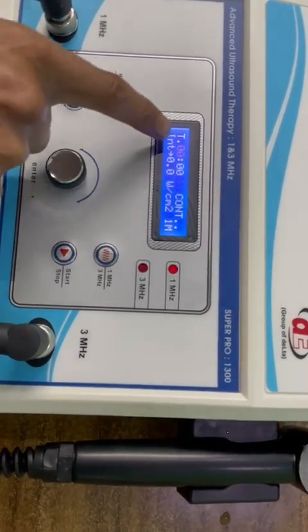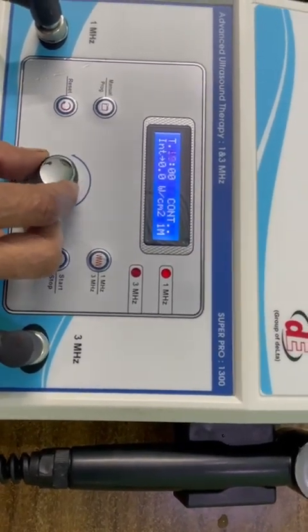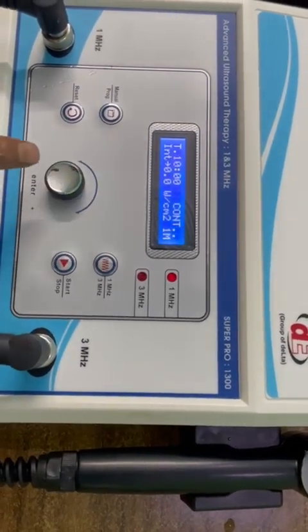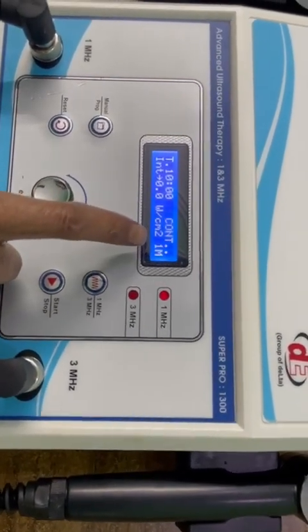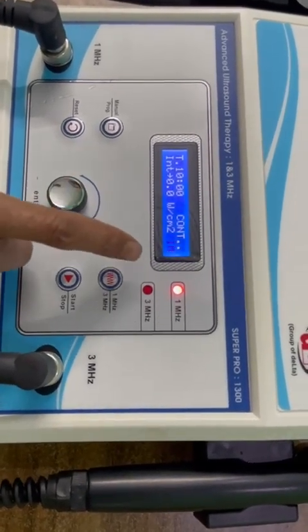Press it again. Set the time. You can rotate intensity mode. We set it at 10 minutes. Now press it again. Now continuous is blinking. Now we want to use it in continuous mode.